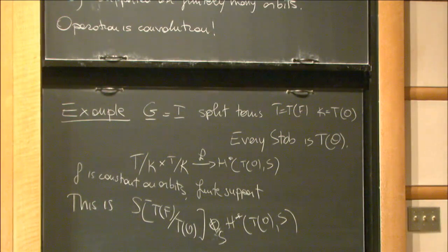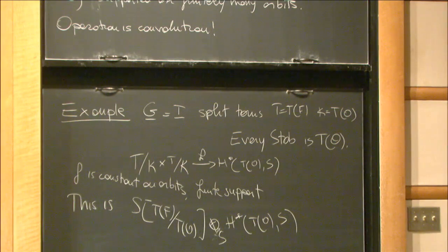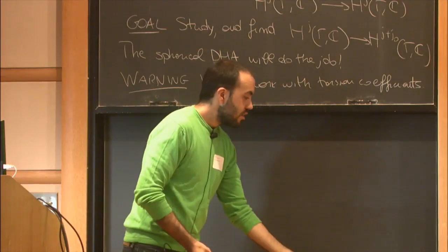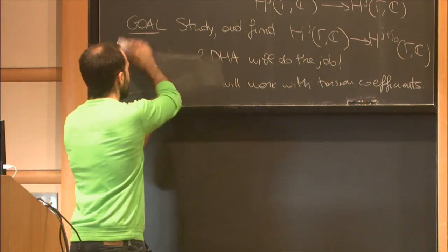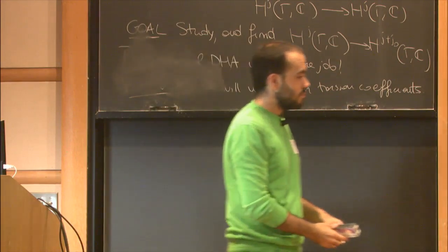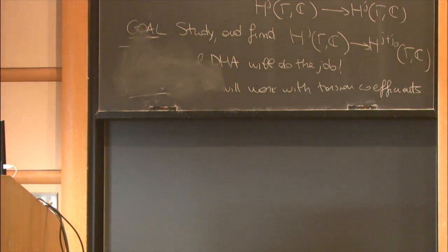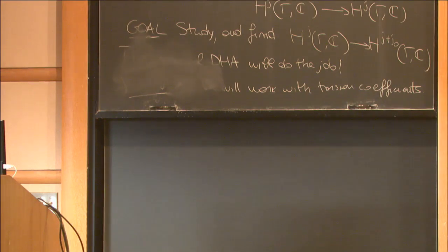Before moving on to the applications, I want to give an idea, at least a sketch, of how one defines this map S — the derived Satake homomorphism. Question: What is the expectation about higher degrees? Answer: In higher degrees, we don't know if the map is injective. We understand degree one very well thanks to that description, but higher degrees not as well.